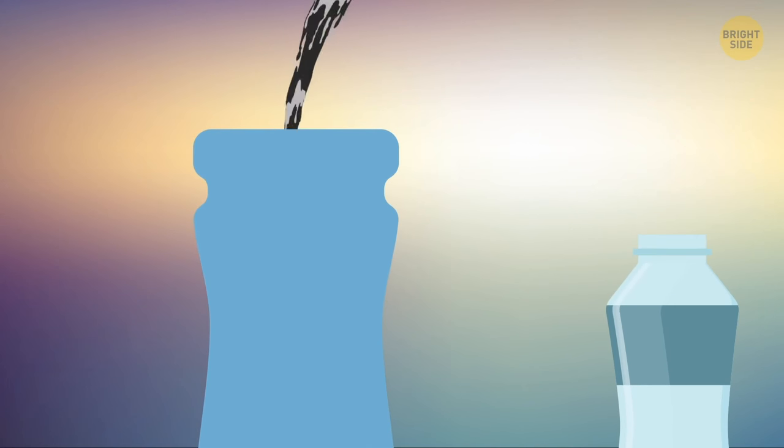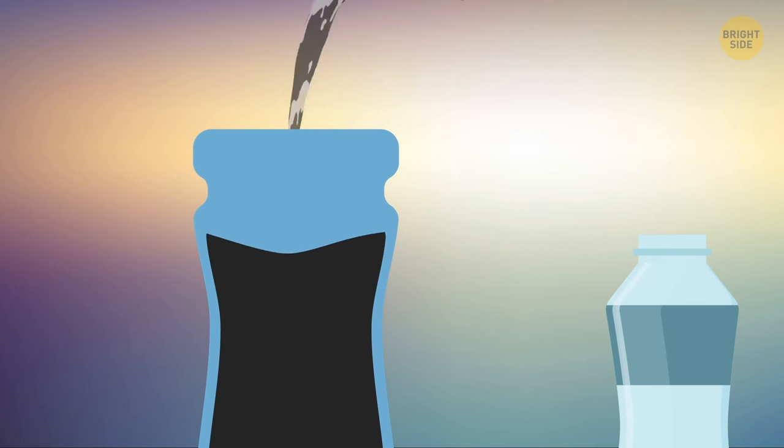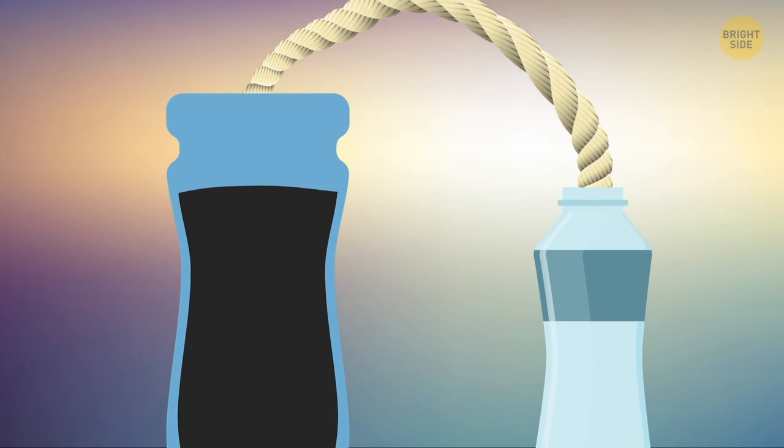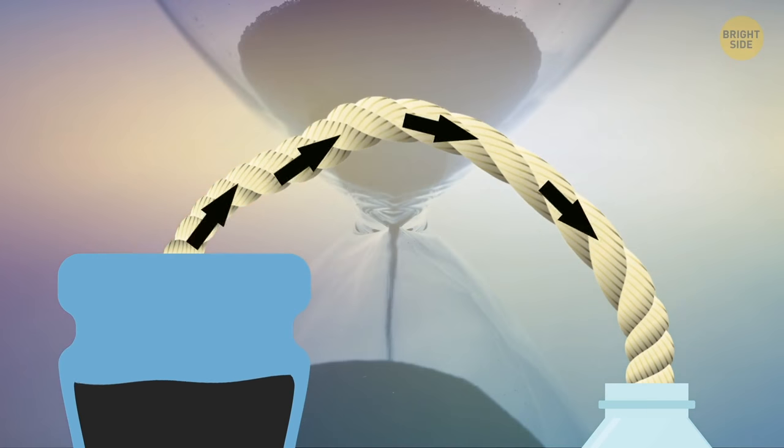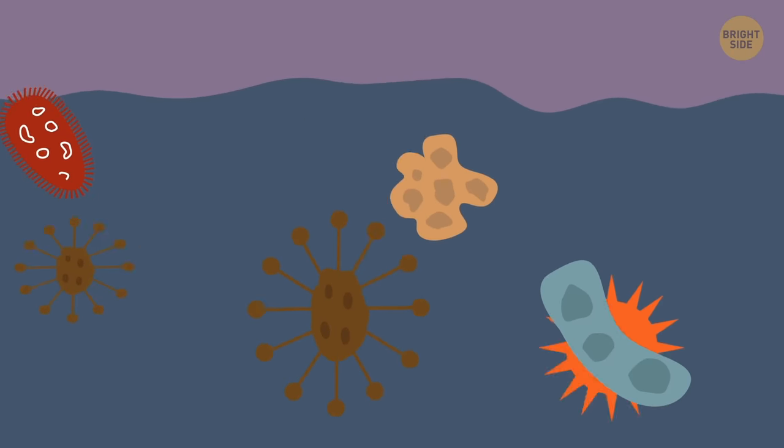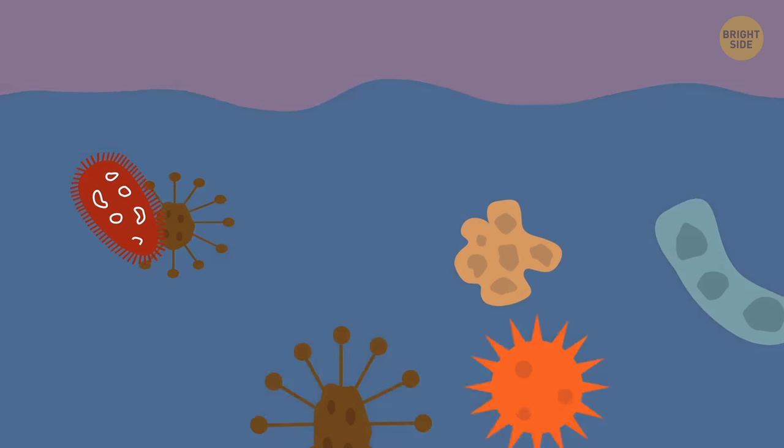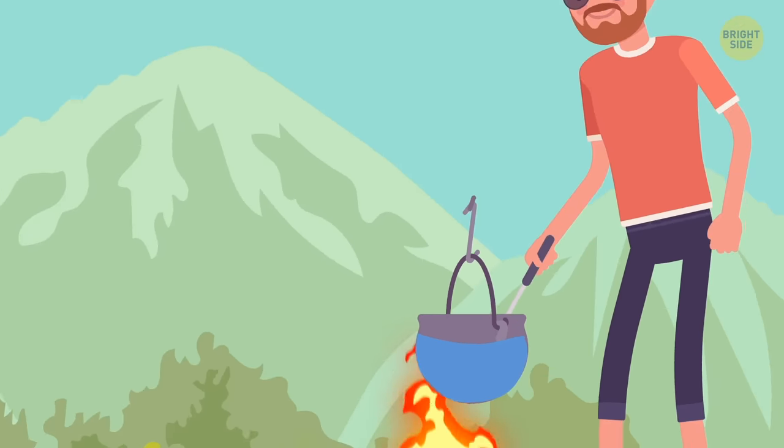Take two containers, one a bit taller than the other. Fill the tall container with dirty water. Twist a piece of cloth and put one end of it into the filled container, feeding the other into the empty one. It will take some time, but a piece of cloth will soak up all the moisture and transport it from one vessel to the other. Good news is, all the dirt and debris will be lost in the process. Don't forget to boil the water to further assure your safety.